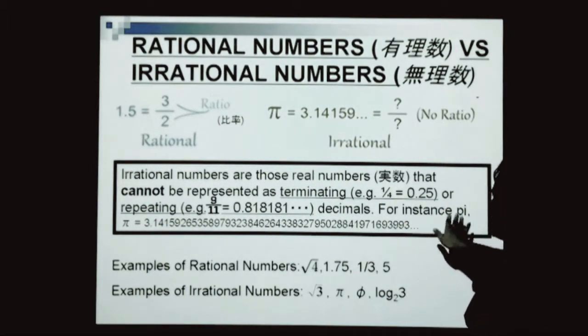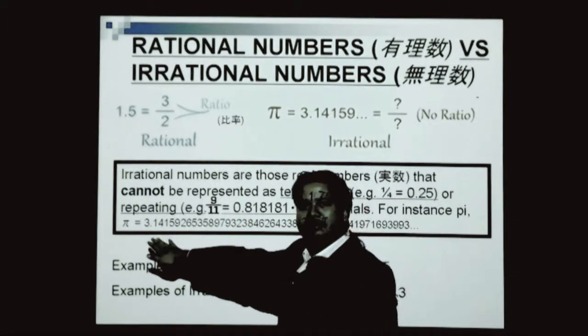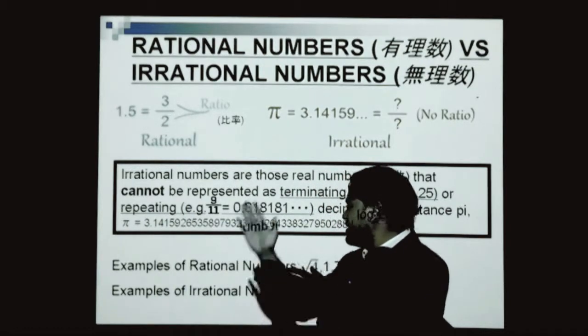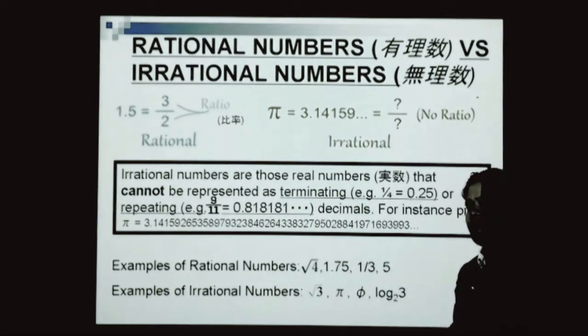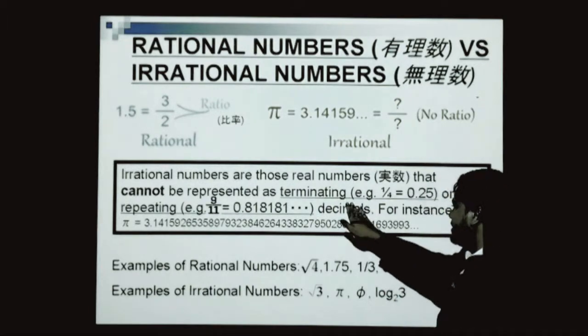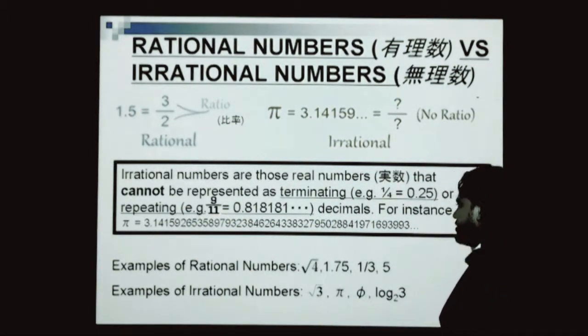For example, pi. Pi is how many times the diameter fits into the circumference of a circle. Pi equals 3.14159, and this number will go on and on. It will not terminate, it will not stop, and it will not repeat.